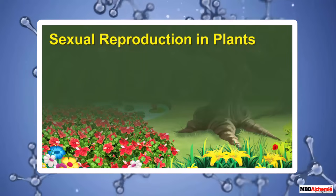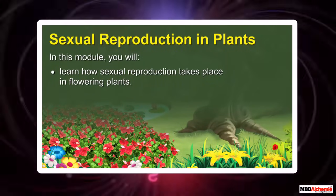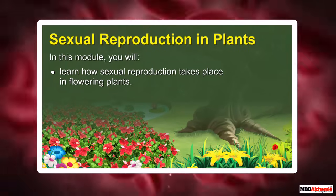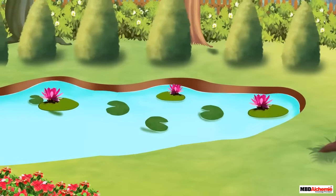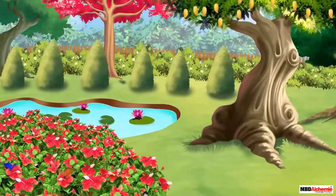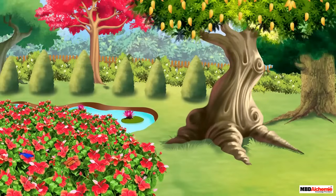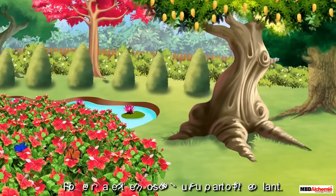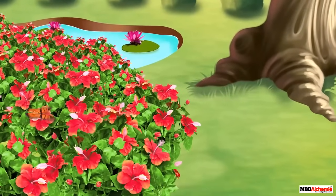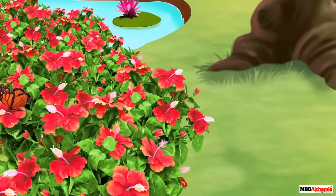Sexual reproduction in plants. In this module you will learn how sexual reproduction takes place in flowering plants. It is spring season, flowers are blooming on the trees — it is indeed a beautiful sight. Flowers attract all of us; they are the most beautiful part of the plant.